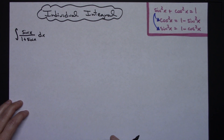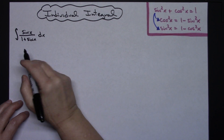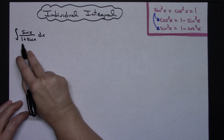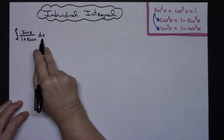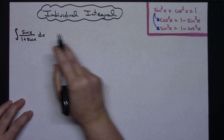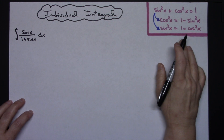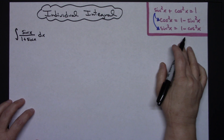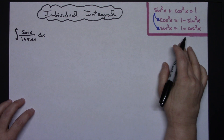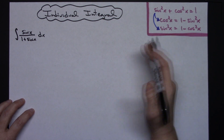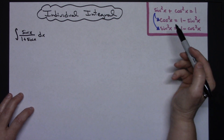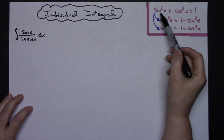In this video I'm going to be working out an individual integral. We're going to take a look at the integral of sine x over 1 plus sine x dx. I have put some trig identities over here in the right-hand corner just so that when I do those substitutions you'll know where that's coming from.